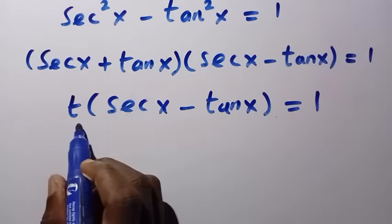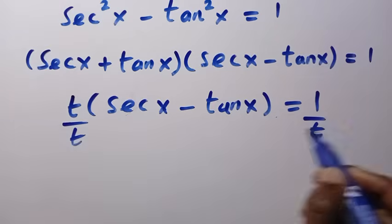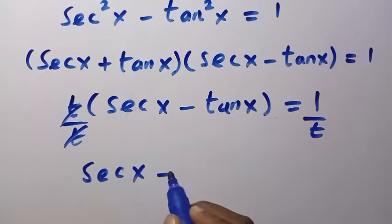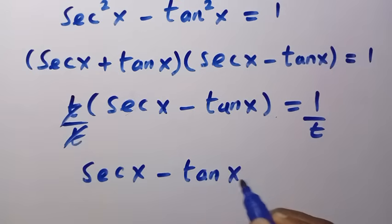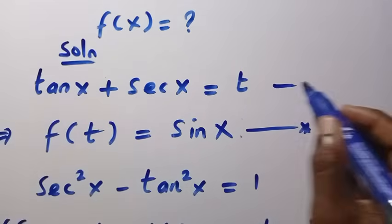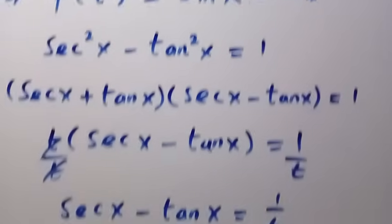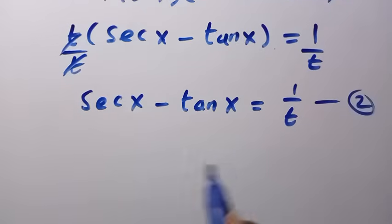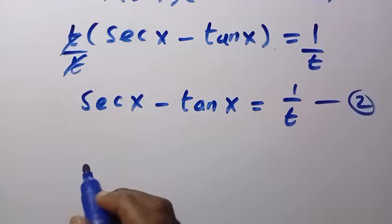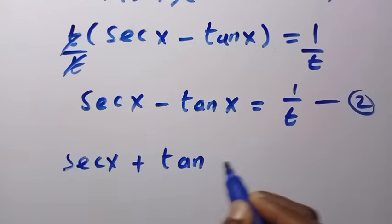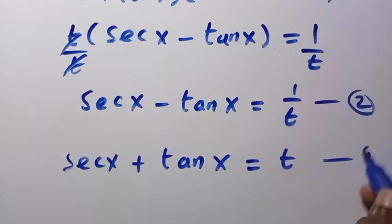By dividing both sides by t, we get sec x minus tan x equals 1 over t. Let's label our two key equations: Equation 1 is sec x plus tan x equals t, and Equation 2 is sec x minus tan x equals 1 over t.